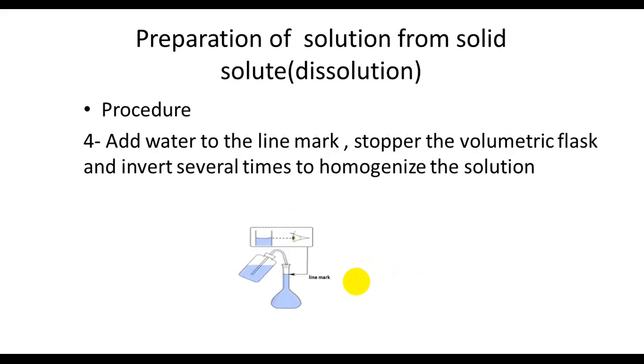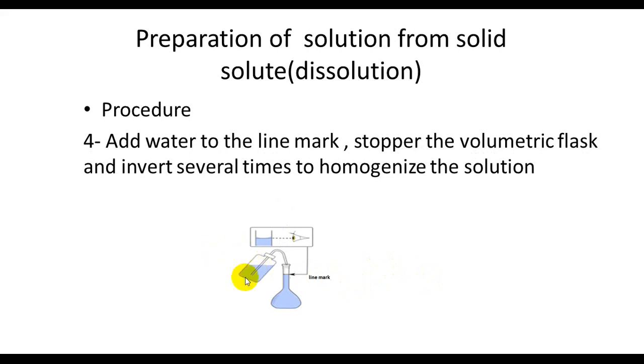Later on, you have to add water to the line mark, then use the stopper to close the volumetric flask, and invert it several times in order to form a homogeneous solution.